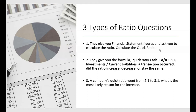For the second type of ratio question, they give you the formula. They'll say: here's the quick ratio formula — cash plus receivables plus short-term investments divided by current liabilities. Then the exam tells you a transaction occurred and asks whether that transaction increased, decreased, or caused the ratio to stay the same. You wouldn't need to memorize the formula; you just have to know the impact of the transaction — for example, cash received from an inventory sale.